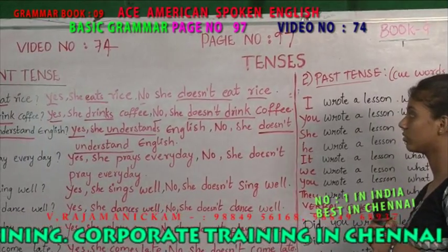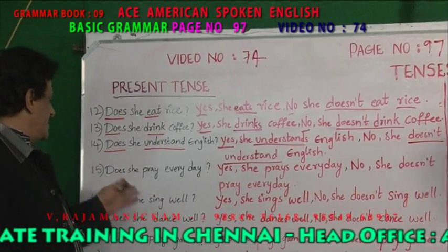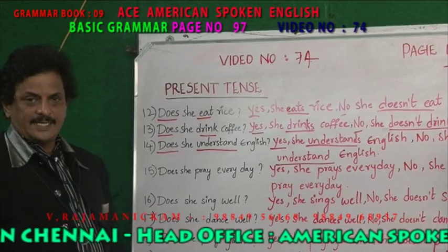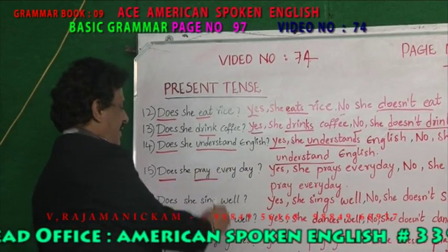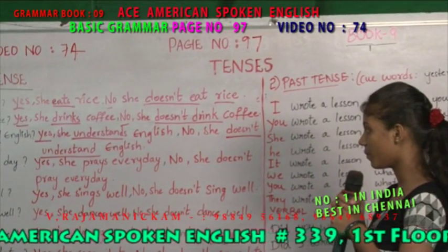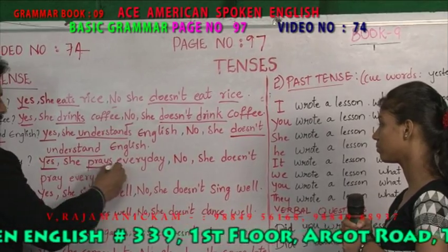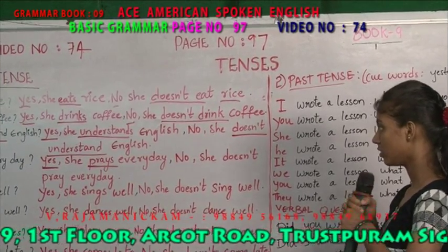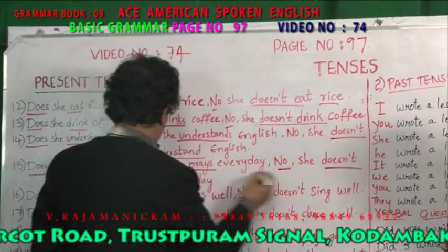So yes or no questions in present tense — yes or no answers in present tense. Fifteenth question: does she pray every day? Does and pray are present tense. The answer: yes, she prays every day. No, she doesn't pray every day.